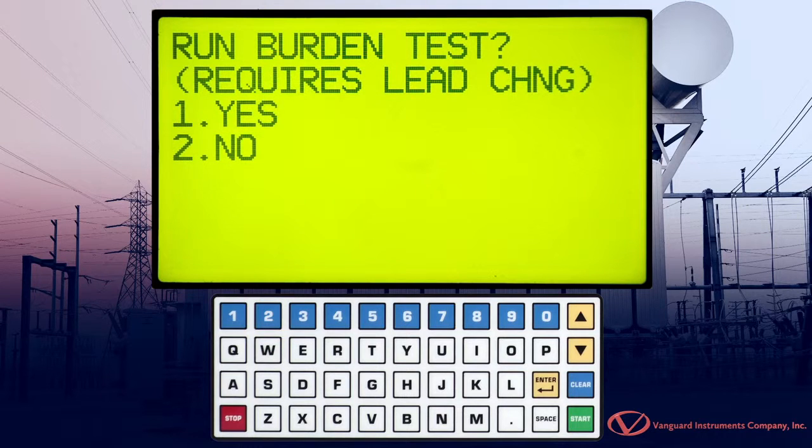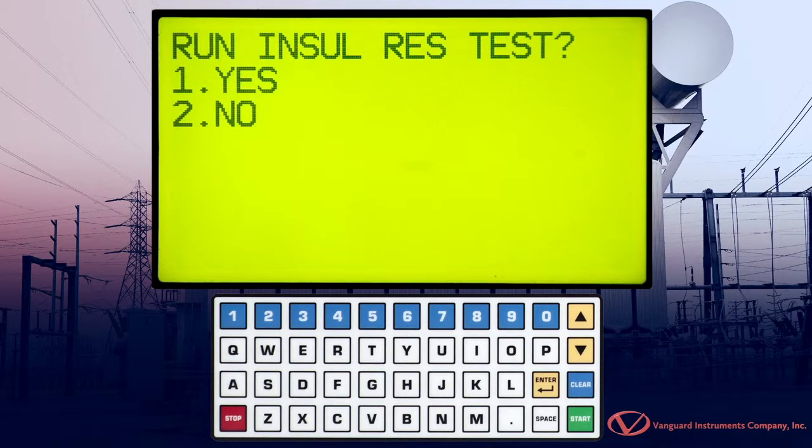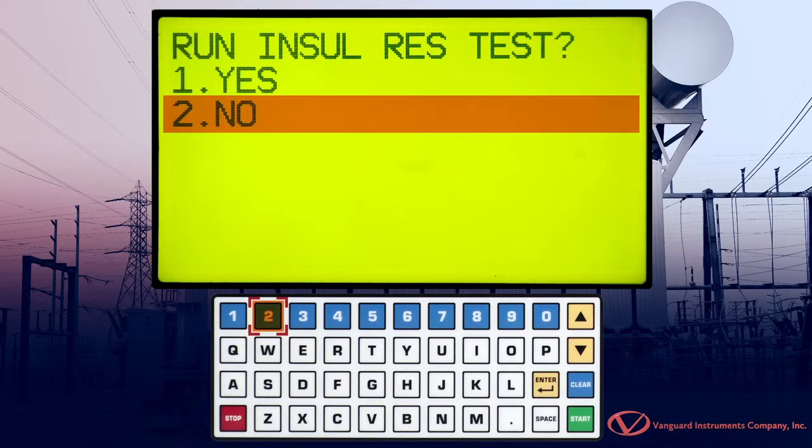We're now given the option to perform a burden test. We'll press 2 for No. We can also perform an insulation resistance test if desired. We'll press 2 for No.